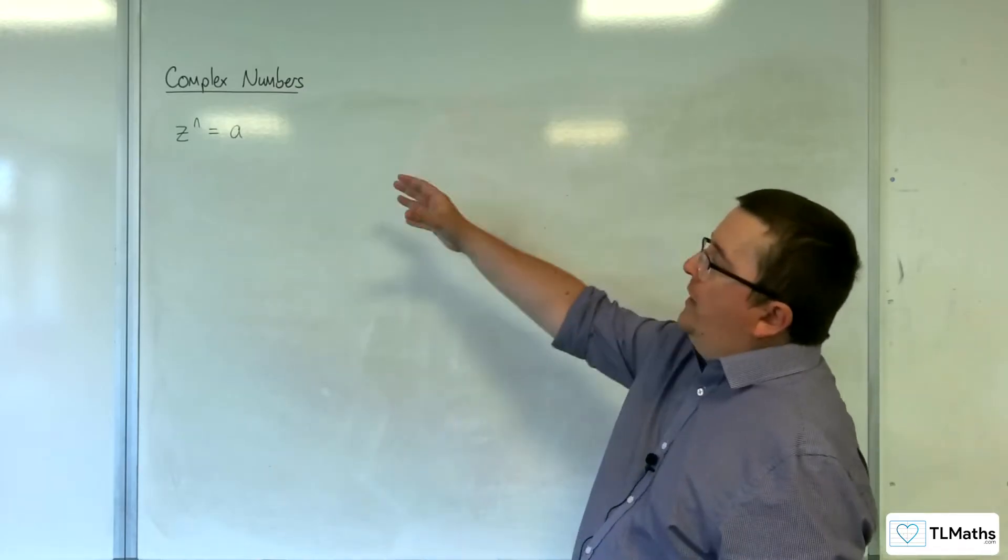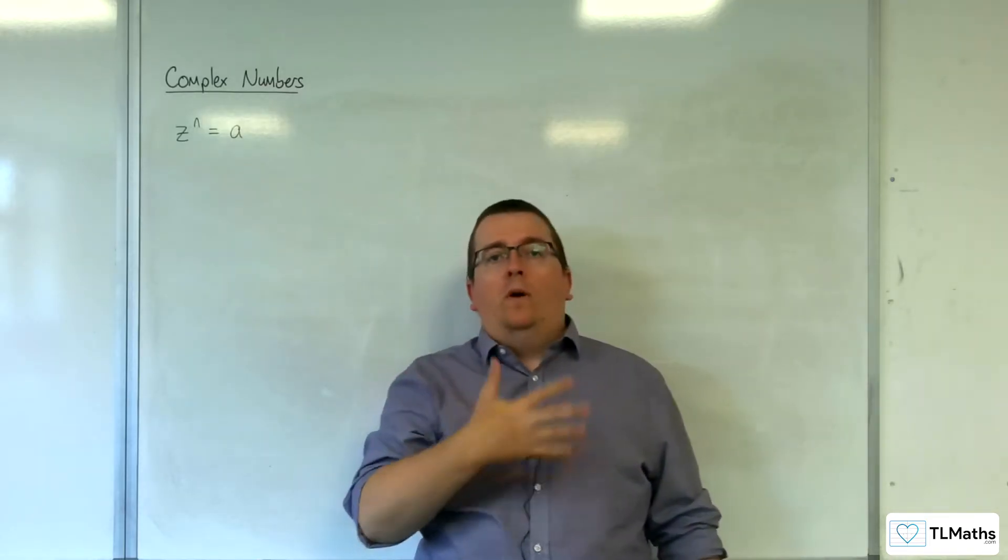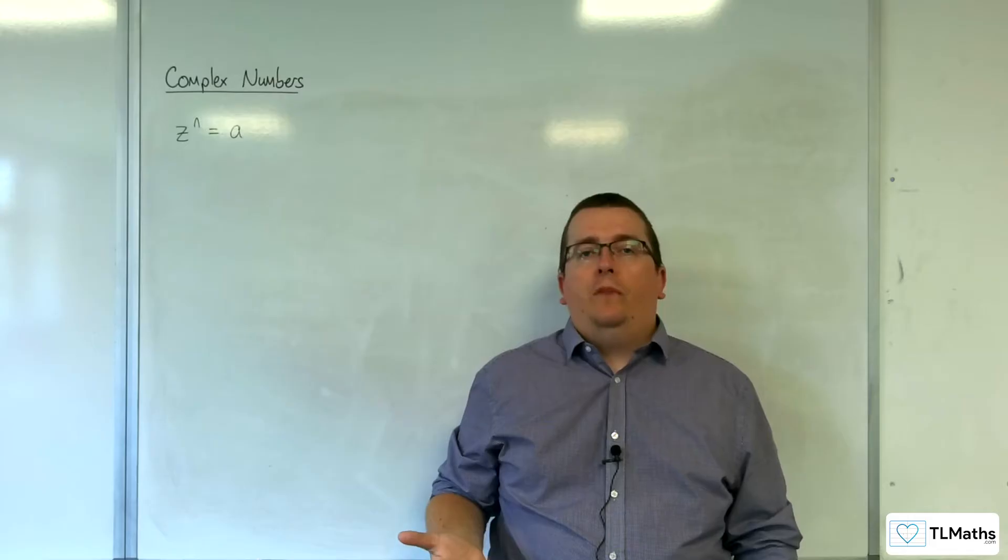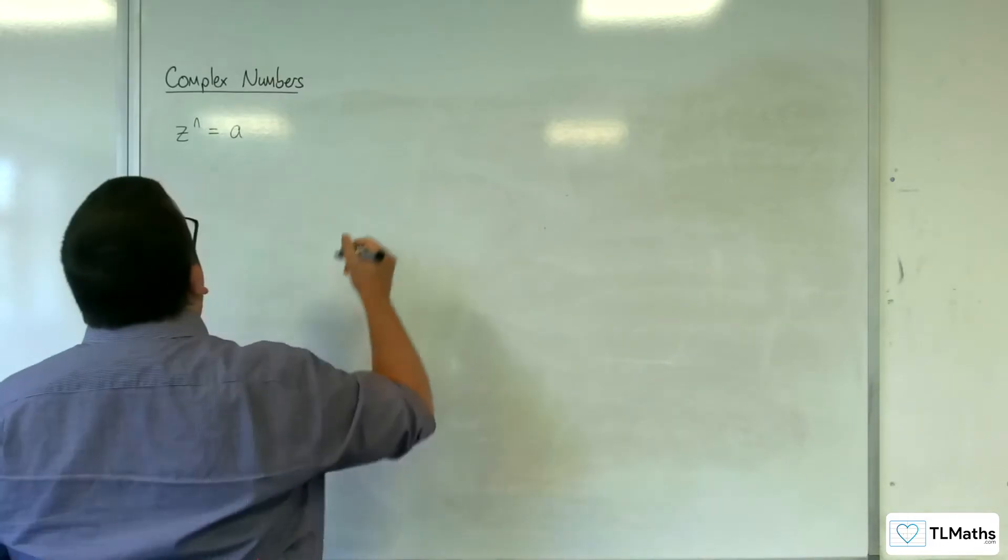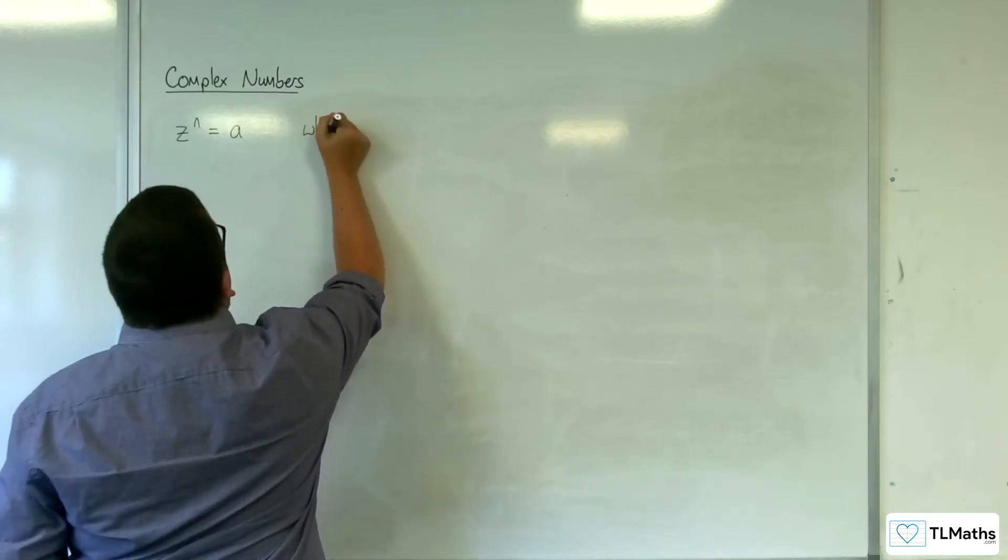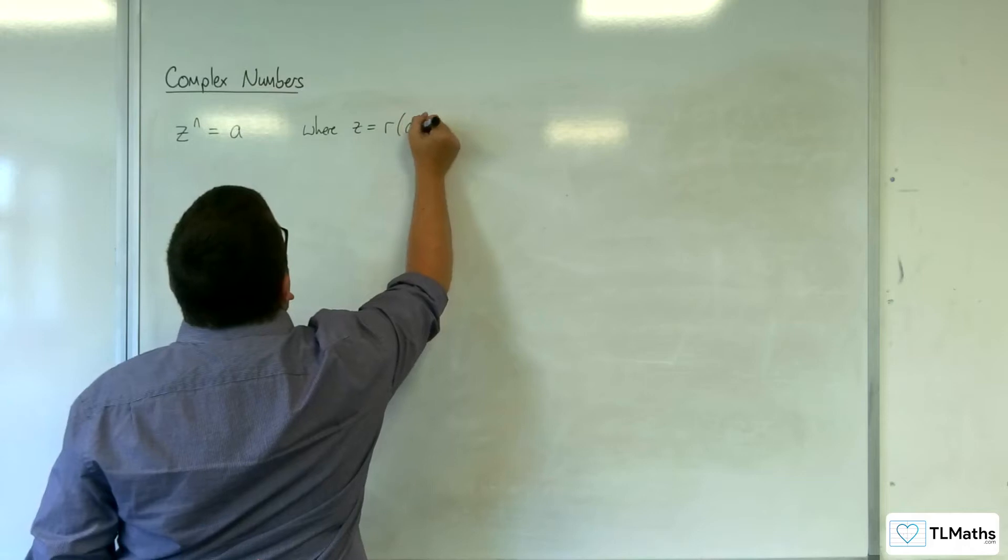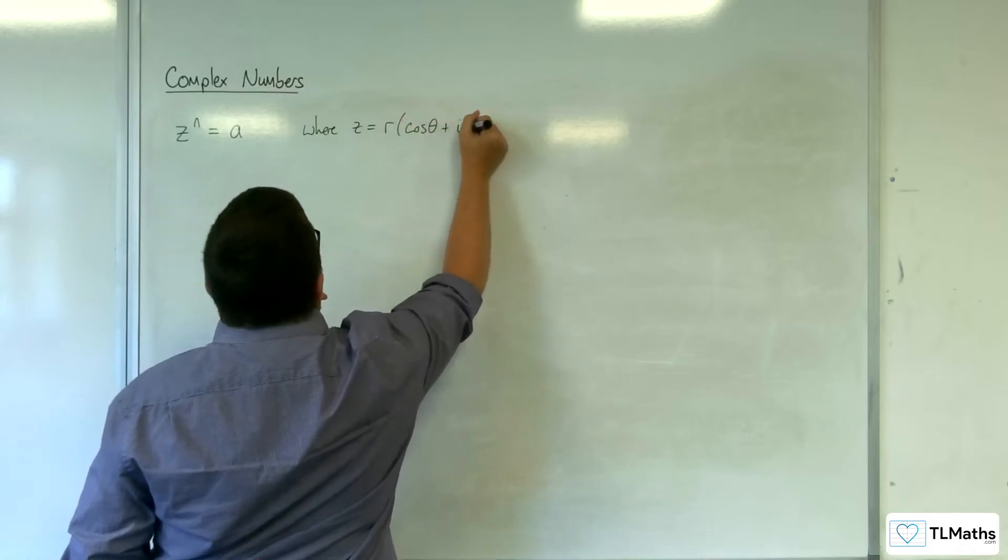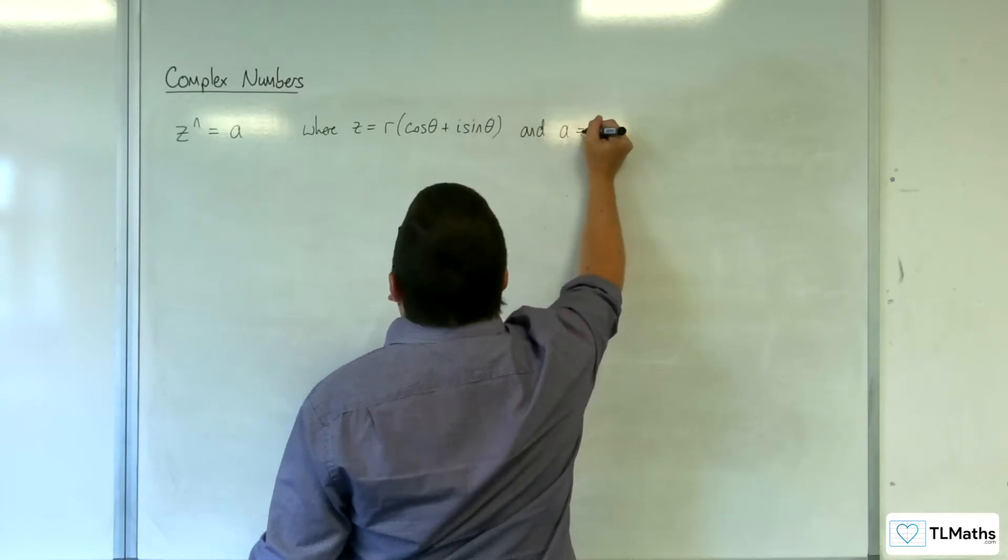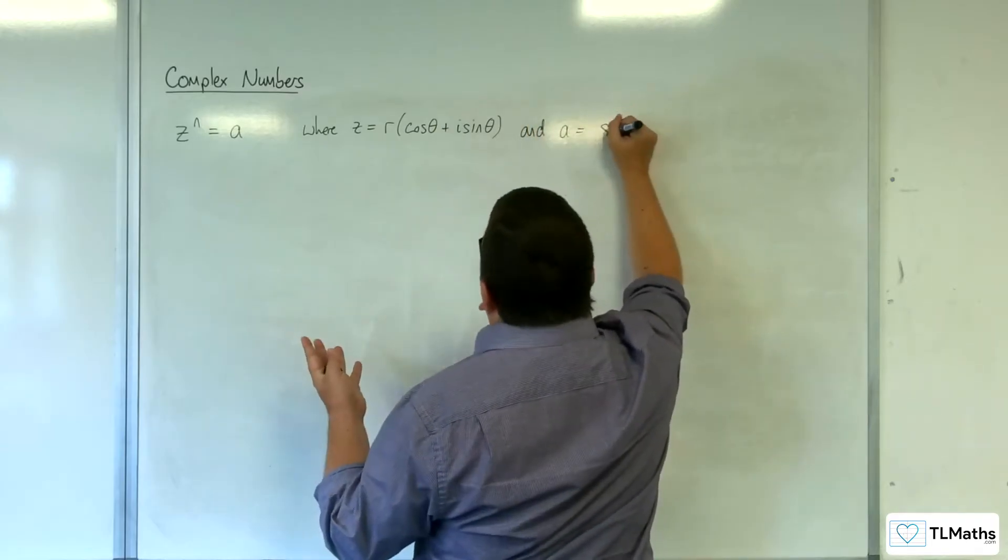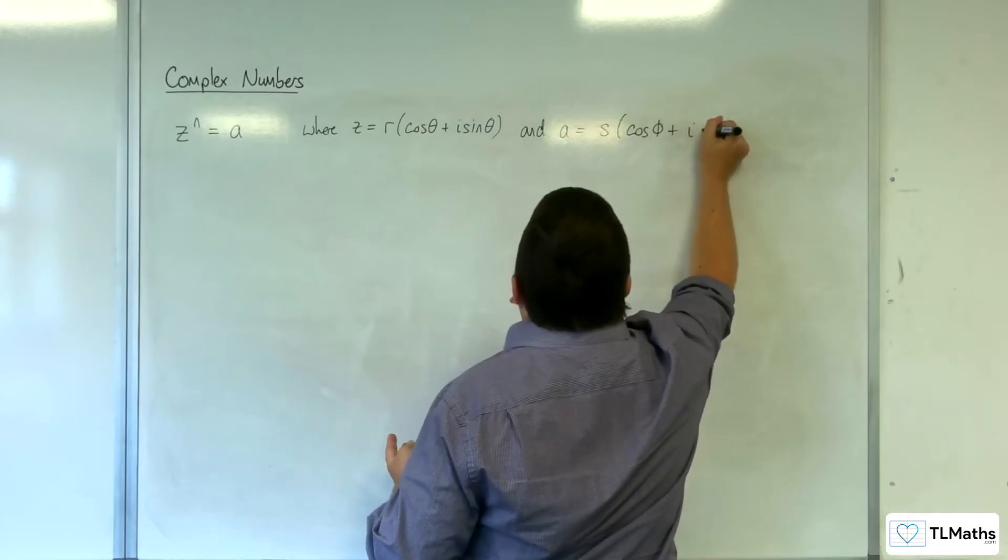So we're going to look at the general equation z to the n equals a, where z and a are complex. Let's set this up where z is equal to r times cosine theta plus i sine theta, and we'll let a be s cosine phi plus i sine phi.